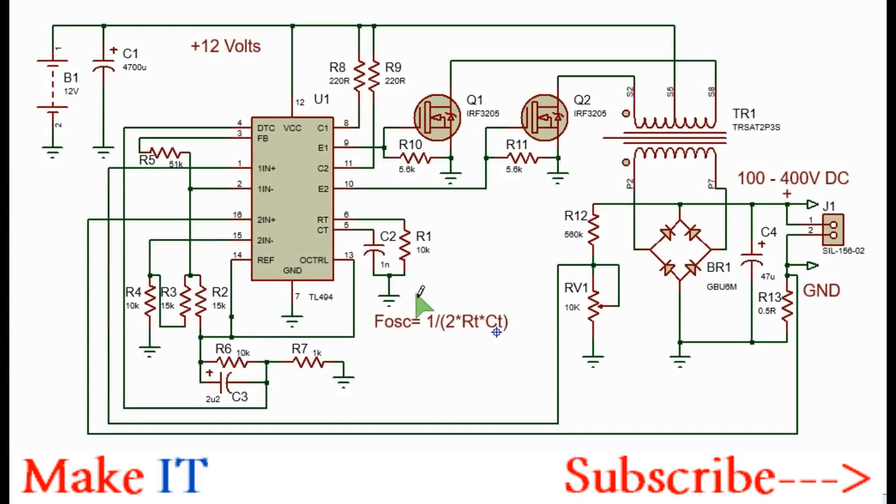Hi, welcome to Make IT. In today's episode, I'll be showing you how you can easily make a 500 watts inverter circuit just with the TL494 pulse width modulation IC and two power MOSFETs. The circuit looks as shown here.